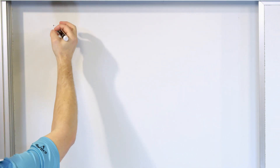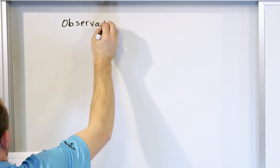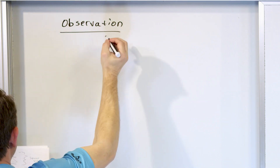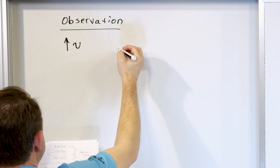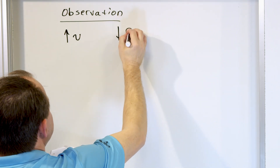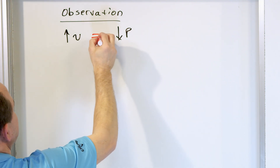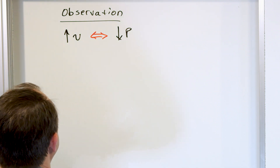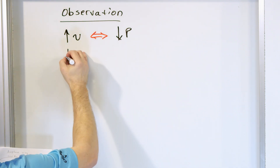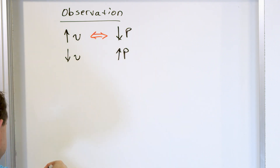The observation we want to explain is that when we have a high velocity, this must correspond to a low pressure - that's the only way to describe it, and it would explain everything we saw. Correspondingly, a low velocity corresponds to a high pressure.